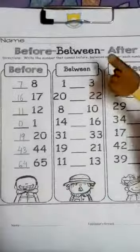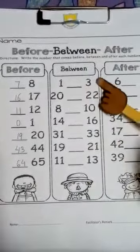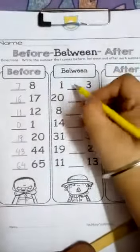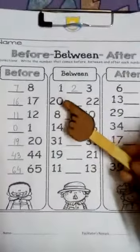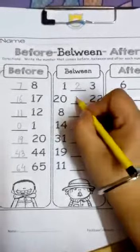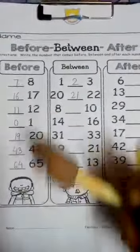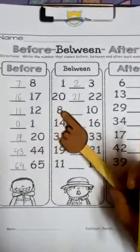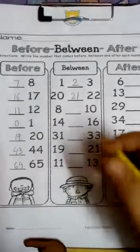So let's do the between numbers. What comes between 1 and 3? Yes, you write 2. Let's see the next one. What comes before 20 and 22? Yes, write 21. Let's see the next one. What comes between 8 and 10? You write 9.